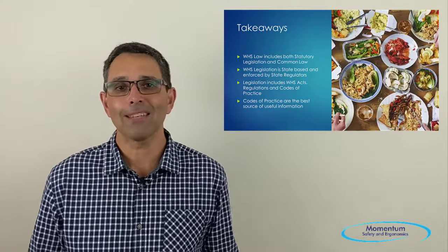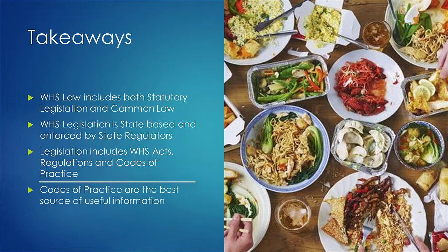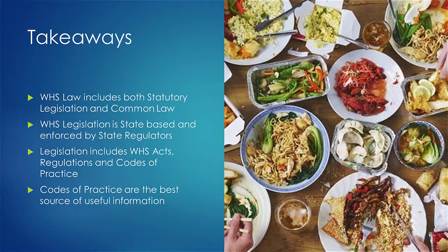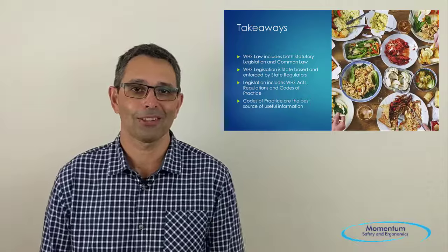To summarise: in Australia, work health and safety law includes both statutory legislation and common law entitlements. Our legislation includes acts, regulations, and codes of practice, and these are all enforced by state governments. When it comes to finding information about health and safety laws, the codes of practice are definitely the best place to go — they provide plain English descriptions of different health and safety topics with clear references to the legislation where appropriate. Thanks so much for listening to this five-minute safety presentation on work health and safety legislation in Australia.